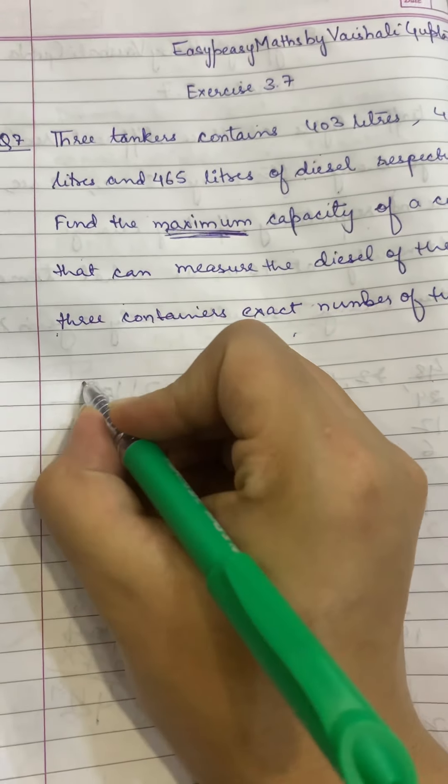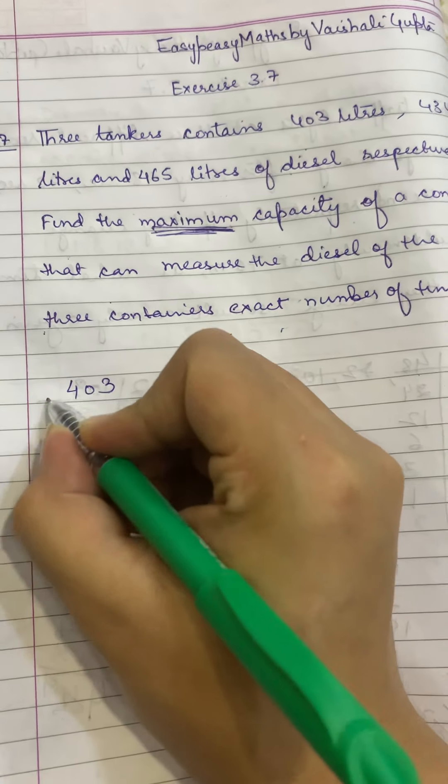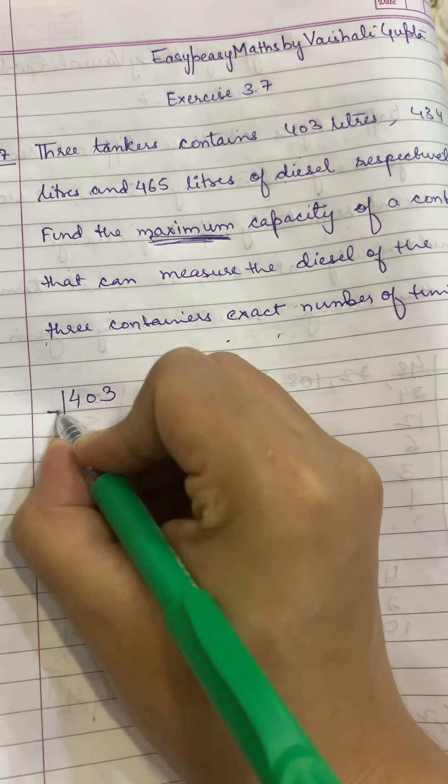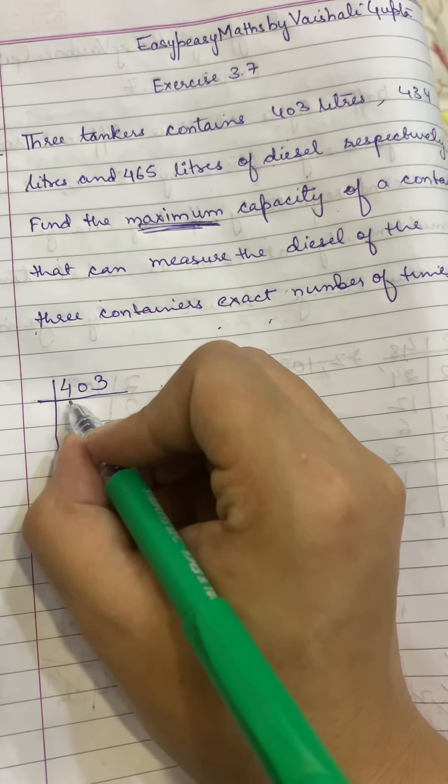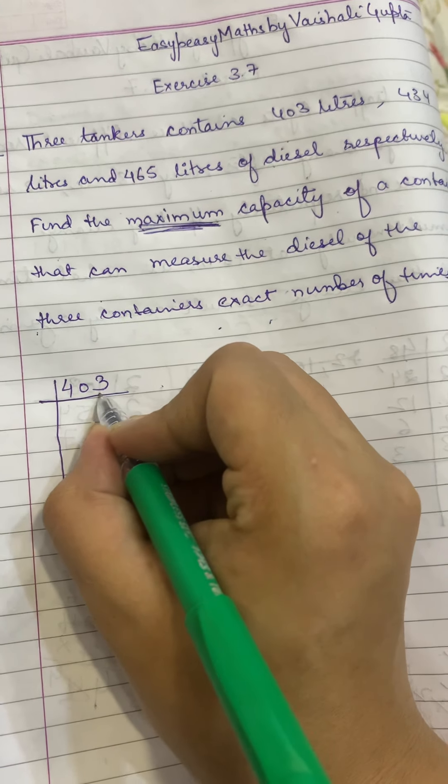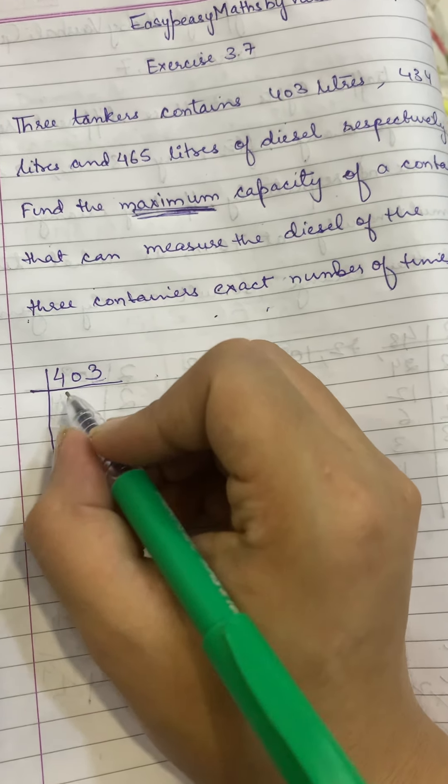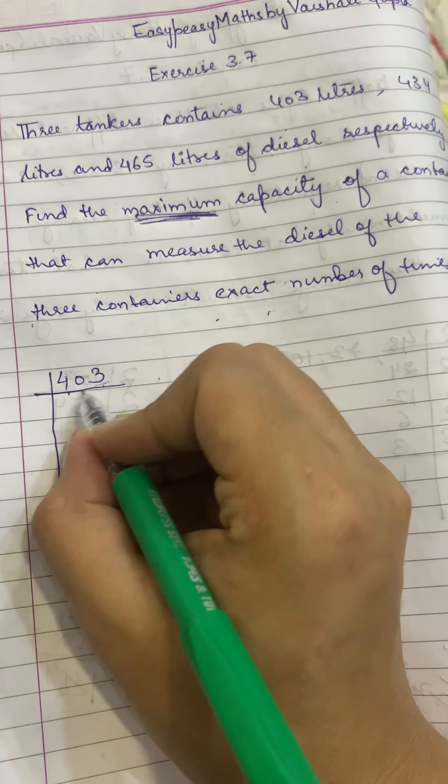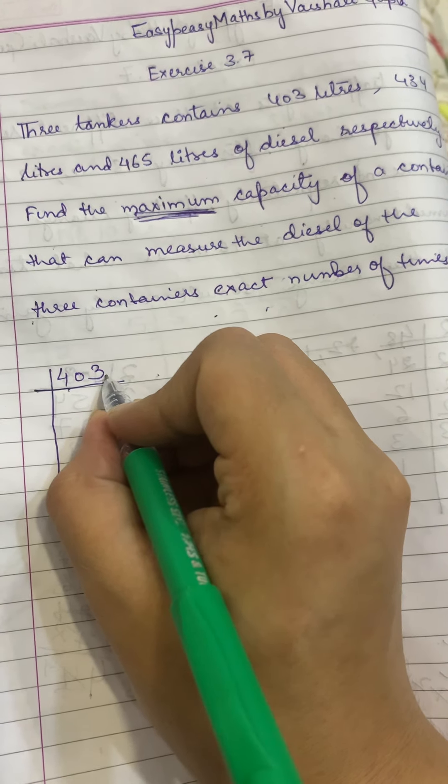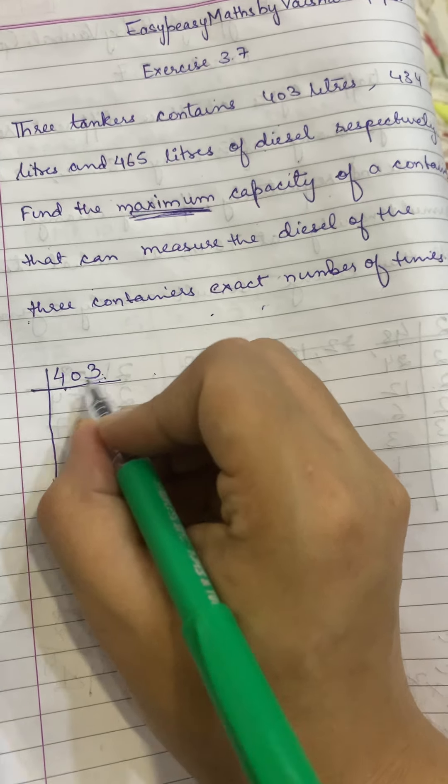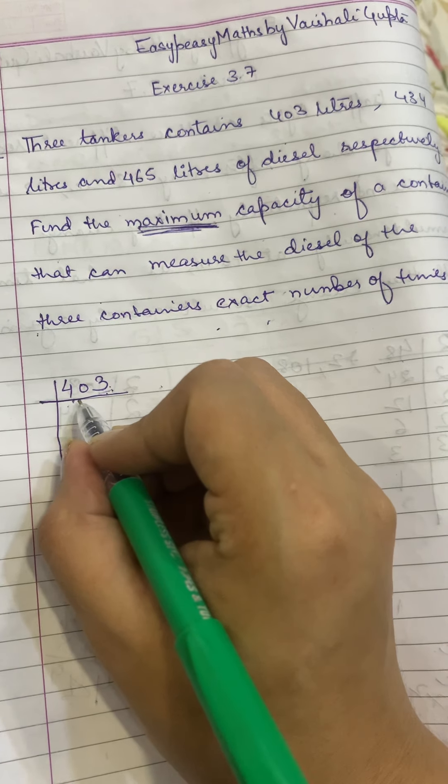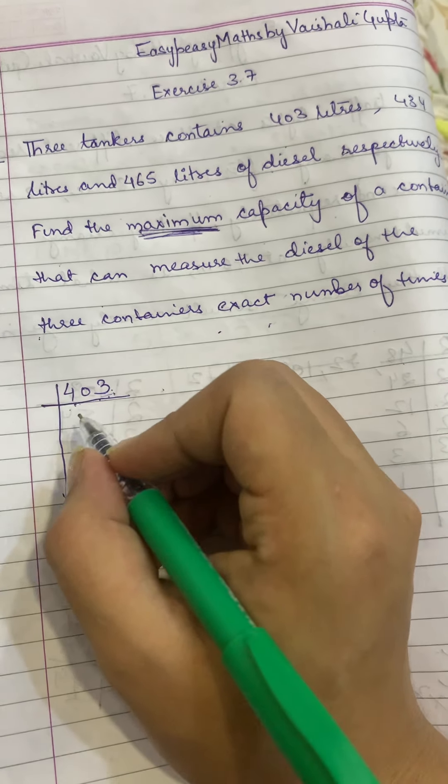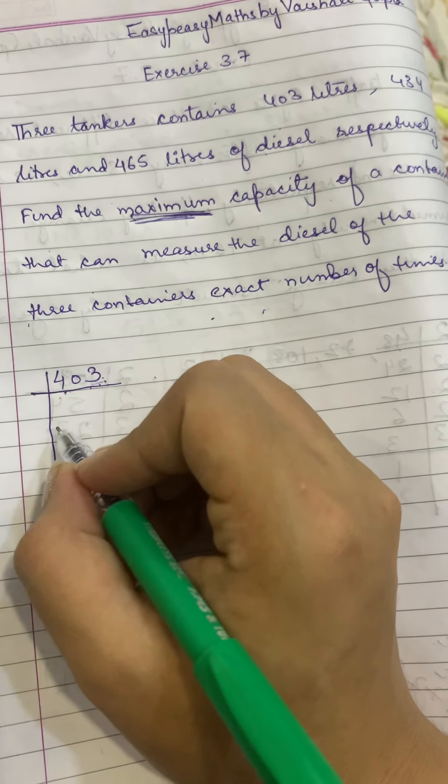So first we will start 403 factors. First we will see that this is not divisible by 2 because its unit place is 3. Then we know that it is not divisible by 3 because 4 plus 3 is 7, and 7 is not divisible by 3. Then we know that the other prime factor is 5. 5 is not divisible because it's not 0 or 5.